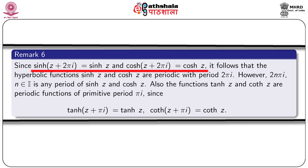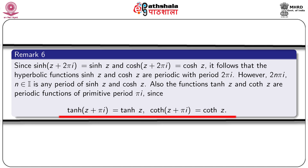We note that sinh(z + 2πi) = sinh z and cosh(z + 2πi) = cosh z, so sinh z and cosh z are periodic functions with period 2πi. However, for any integer n, 2nπi is also a period of sinh z and cosh z. The functions tanh z and coth z are also periodic functions with primitive period πi, since tanh(z + πi) = tanh z and coth(z + πi) = coth z.